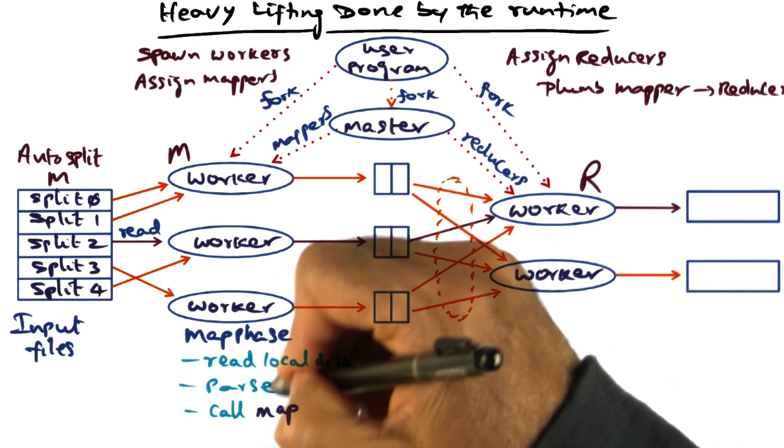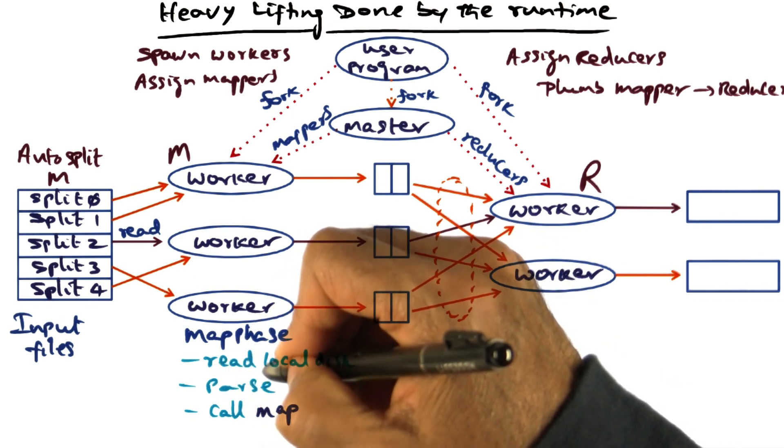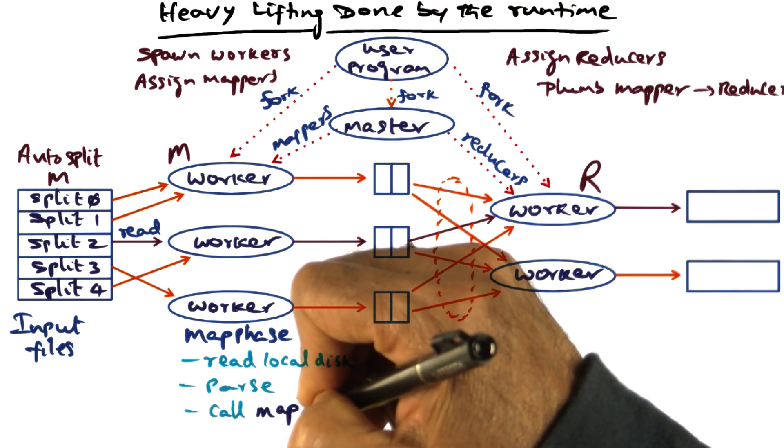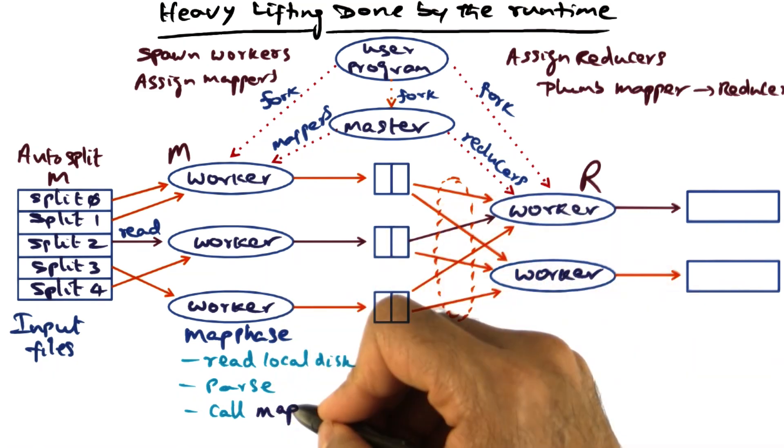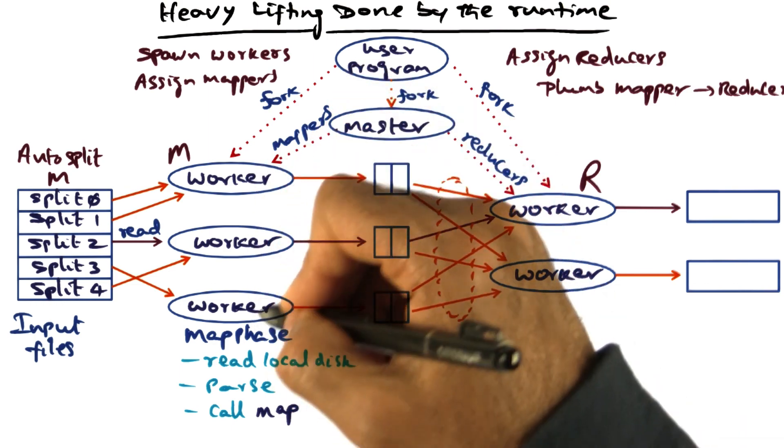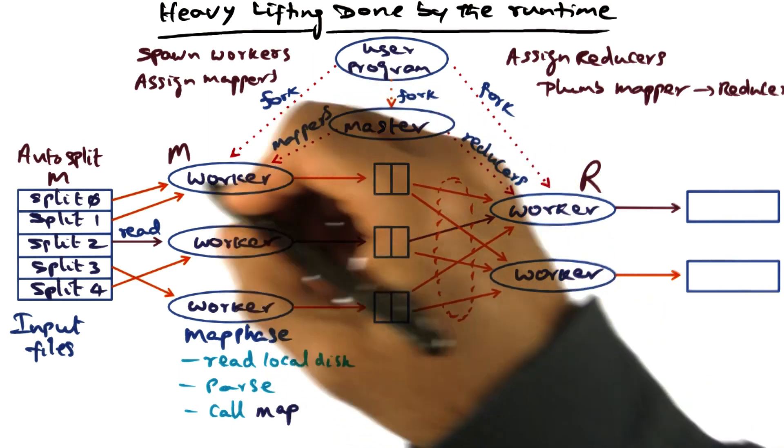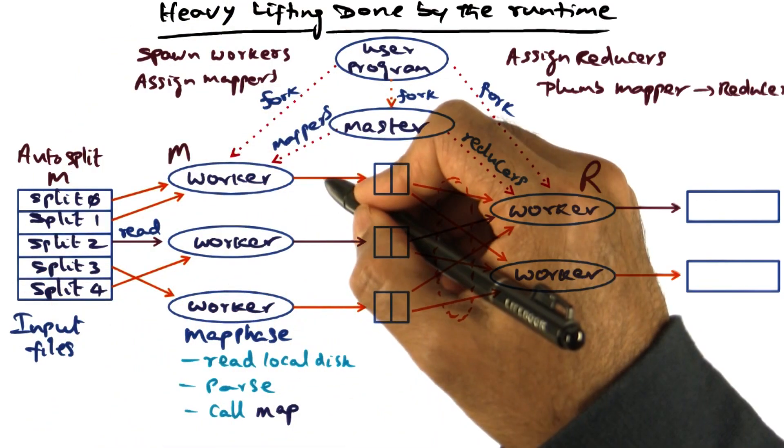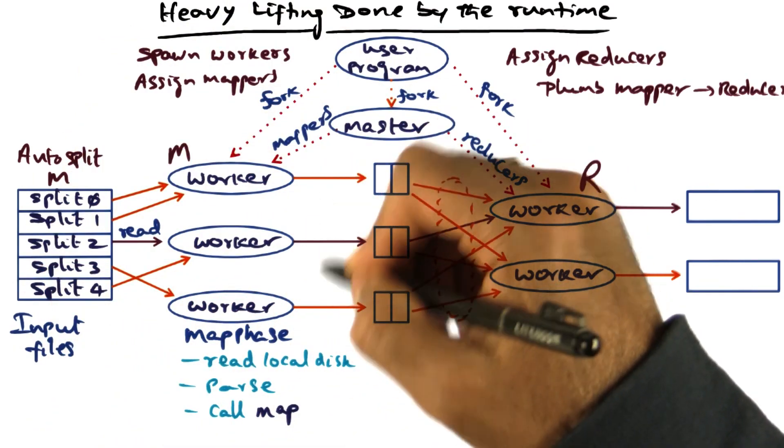The rest are things that need to be done in order to facilitate the work to be carried out by the domain expert in the map function. The intermediate key value pairs that will be produced by the mapper will be buffered in memory. Each one of these workers is doing a portion of processing the input key value pairs and producing their respective outputs.